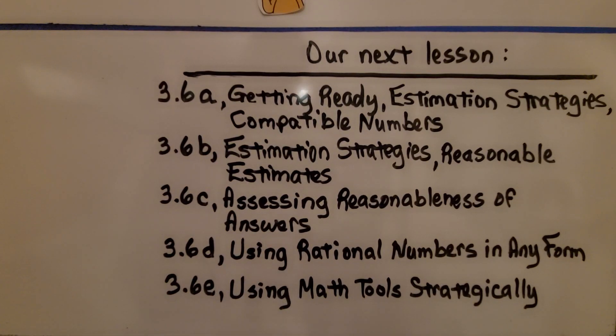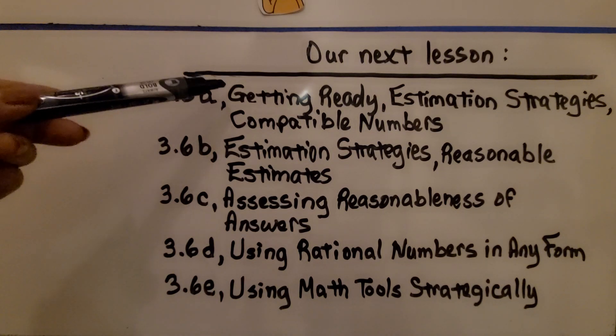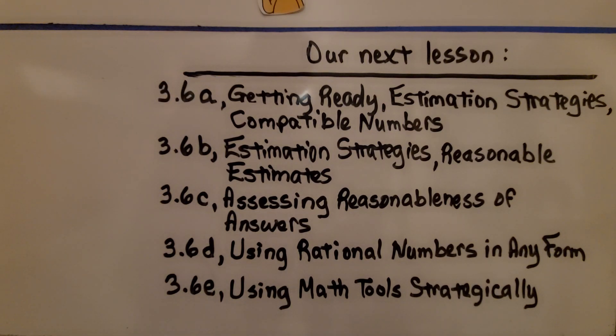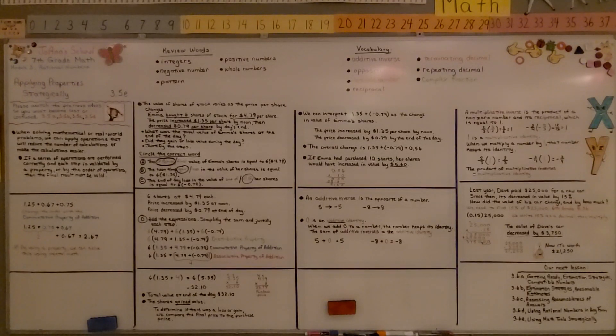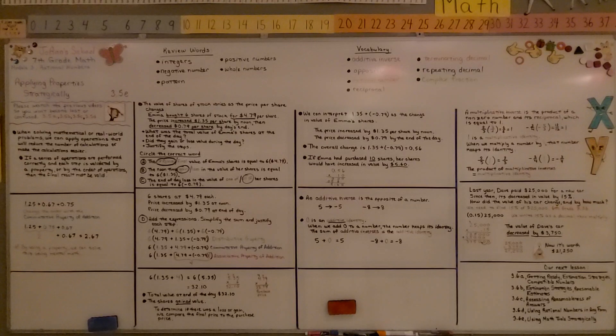We're going to move on to 3.6, which you can see is split into five parts because the first part of it is a getting ready. We're going to be doing estimation strategies and using compatible numbers. So, another way to easily remember additive inverse versus additive identity is, just remember, inverse means opposite. An identity would be what makes that number keeps its identity. When you're adding, it would be using a zero. When you're multiplying, it would be using a one.